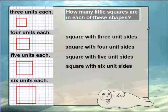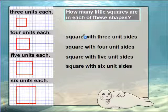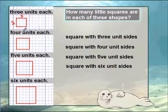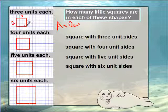All right, so let's look at this. This is showing how many little squares are in each of these shapes. It says squares with three units on the side — so we're counting up: one, two, three. There are three on this side and three over here. We know that finding the area of a rectangle or square is area equals length times width, so that's just three times three, which means there are nine units inside.